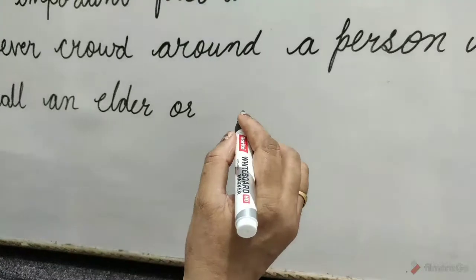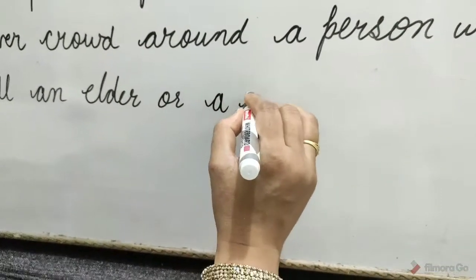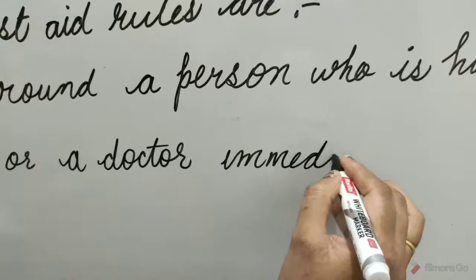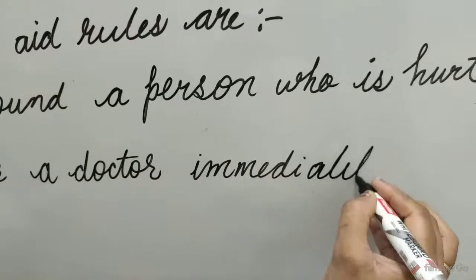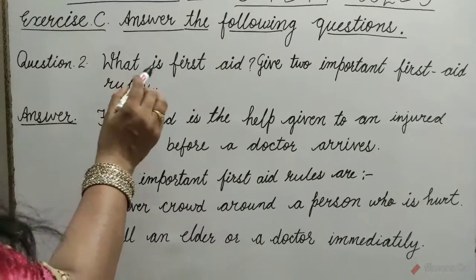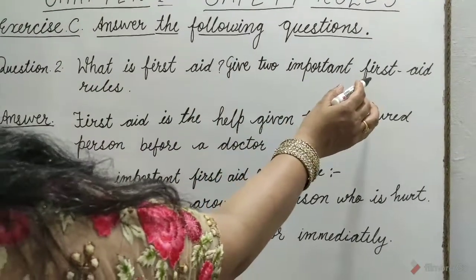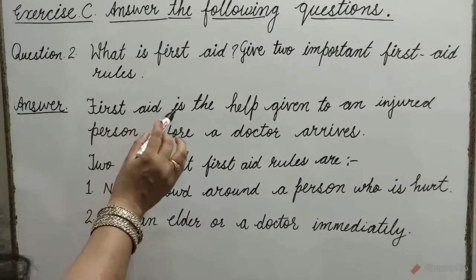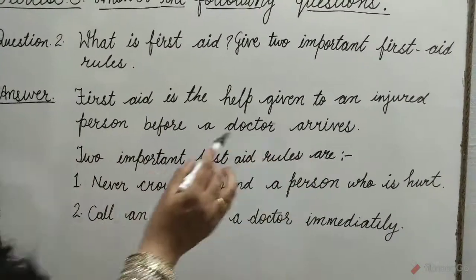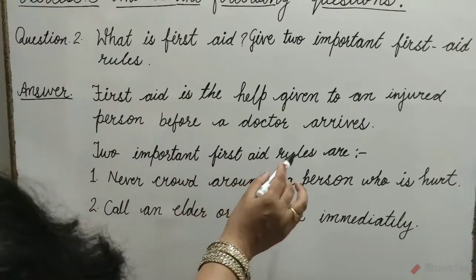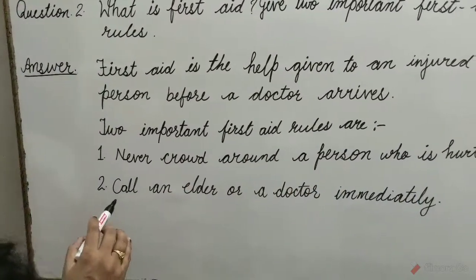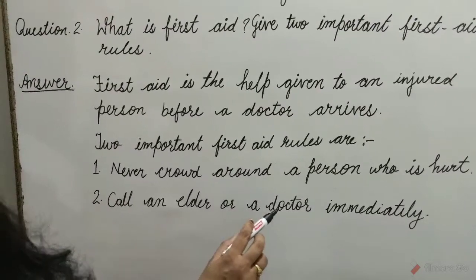Call an elder or a doctor immediately. Question: What is first aid? Give two important first aid rules. Answer: First aid is the help given to an injured person before a doctor arrives. Two important first aid rules are: 1. Never crowd around a person who is hurt. 2. Call an elder or a doctor immediately.